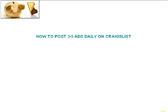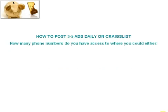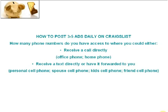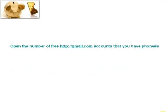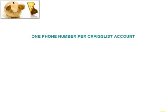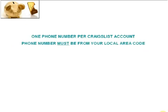How to post three to five ads daily on Craigslist: how many phone numbers do you have access to? You could receive a call directly on an office phone or home phone, receive a text, or have it forwarded to a personal cell phone, a spouse's cell phone, a kid's cell phone, or a friend's cell phone. Open the same number of free Gmail accounts as you have phone numbers, forward each Gmail account to your main email address, then open a Craigslist account with each Gmail address — one phone number per Craigslist account, and the phone number must be from your local area code to get the verification callback.